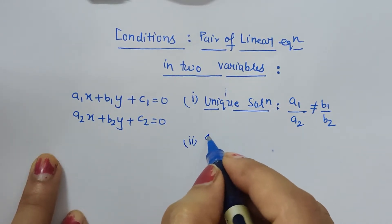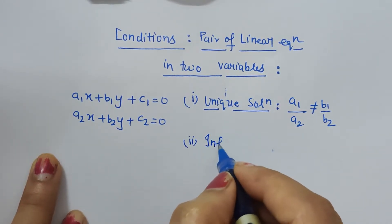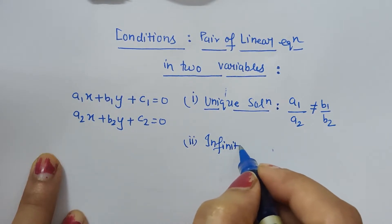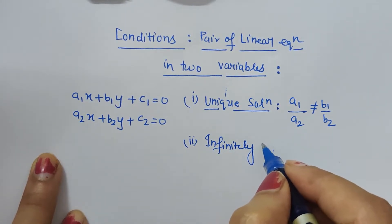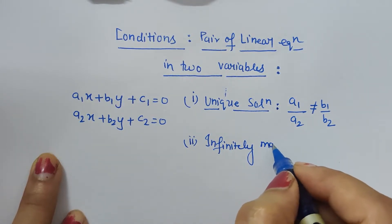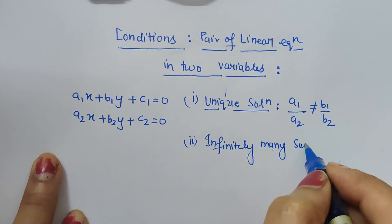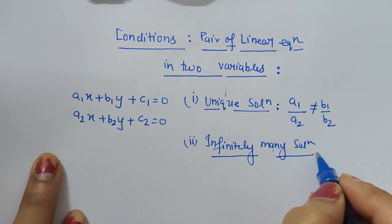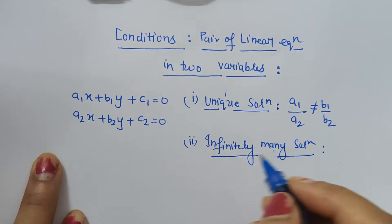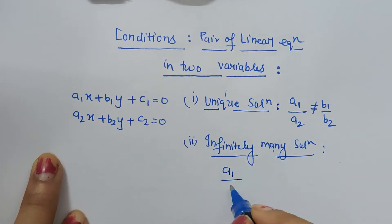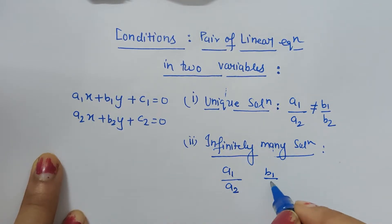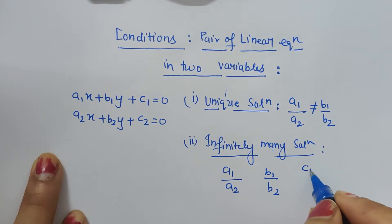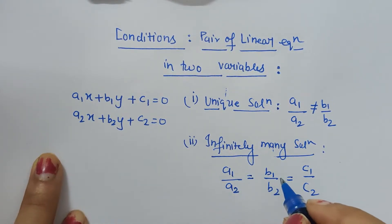Next is infinitely many solutions. What does it indicate? The condition for infinitely many solutions is when you compare the ratios a1 upon a2, b1 upon b2, and c1 upon c2 — if all three ratios are equal, then we say the system of linear equations has infinitely many solutions.